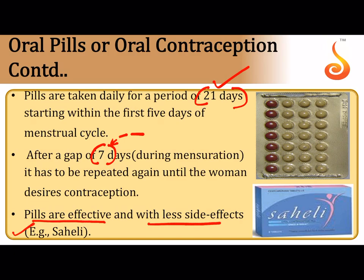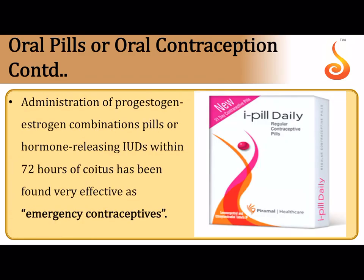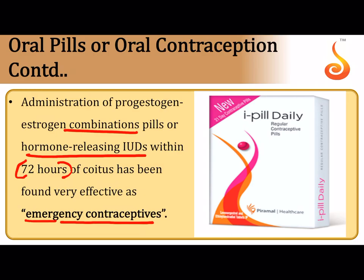Oral pills are very effective with fewer side effects. Saheli, the mini pill devised by CDRI Lucknow, is a notable example. Oral pills and hormone-releasing IUDs can also be used as emergency contraceptives within 72 hours of unprotected sexual intercourse. When used within 72 hours, they prevent conception or prevent sperm transfer into the fallopian tube. This use within 72 hours of coitus is referred to as emergency contraception.